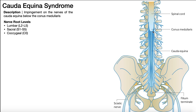Coming down from the conus medullaris, we have all these nerve roots — you can see them looking like little strings. Collectively, all of these kind of look like the hairs that make up a horse's tail, thus the term cauda equina, which means horse's tail in Latin. The nerve root values that constitute the cauda equina really begin at L2 and go all the way down: lumbar levels L2 to L5, all of the sacral nerve root levels S1 to S5, and then the coccygeal nerve root, which is C0.